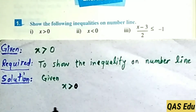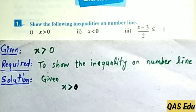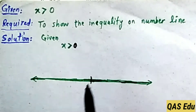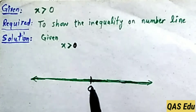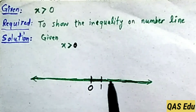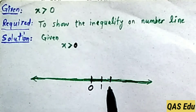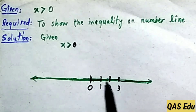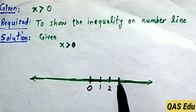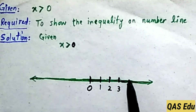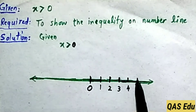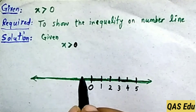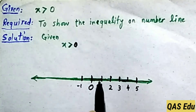Draw the number line carefully. Place numbers at equal distances on both sides. Put 0 at the central point. On the right side, place positive numbers at equal distances. Try to keep the distances equal using a ruler for a perfect result.